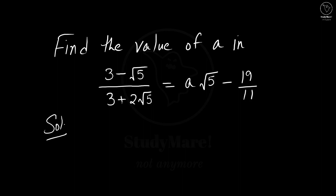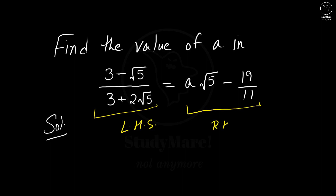This is an expression where we have two sides — one is LHS and the other is RHS — separated by an equal-to sign, which means both sides of this expression are equal.